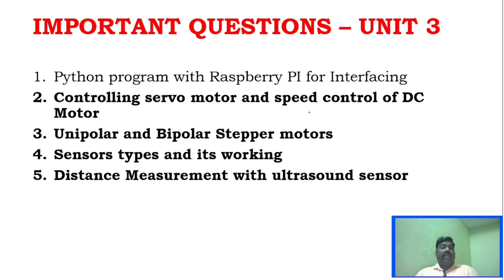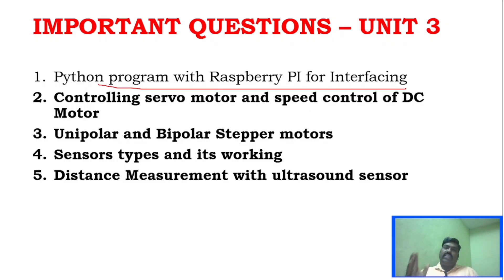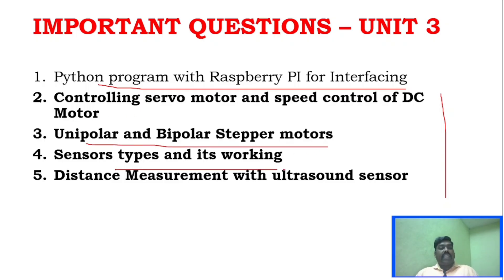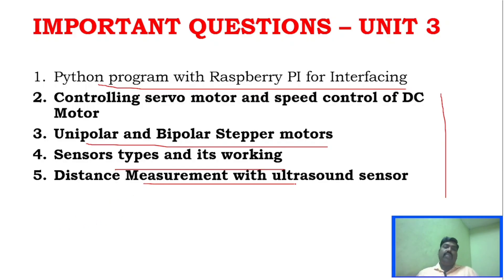Unit 3 is a bit of a challenge, but there is a Python programming question — just go through the interface for Python programming. Key questions include controlling servo motor and speed control DC motor, unipolar and bipolar stepper motor, and sensor types and their working. Sensor types are very in-depth — cover the concept, principle, and diagram. Distance measurement with ultrasound sensor is also a very important key area.